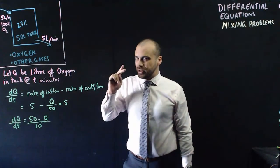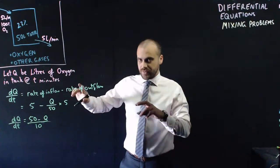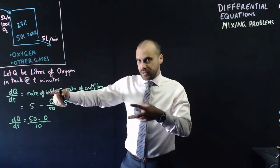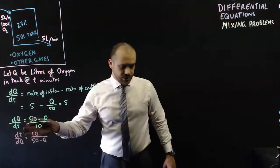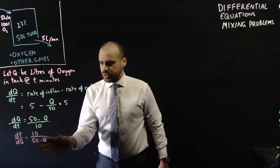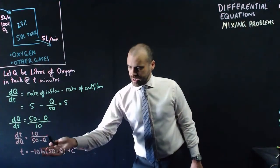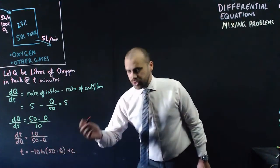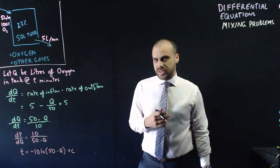But we really need an equation in terms of t, now that we have that differential equation. So we're going to flip that equation and then integrate it. So dt/dQ equals 10 over 50 minus Q, and then t equals negative 10 ln(50 minus Q), and then don't forget your plus C on the end.